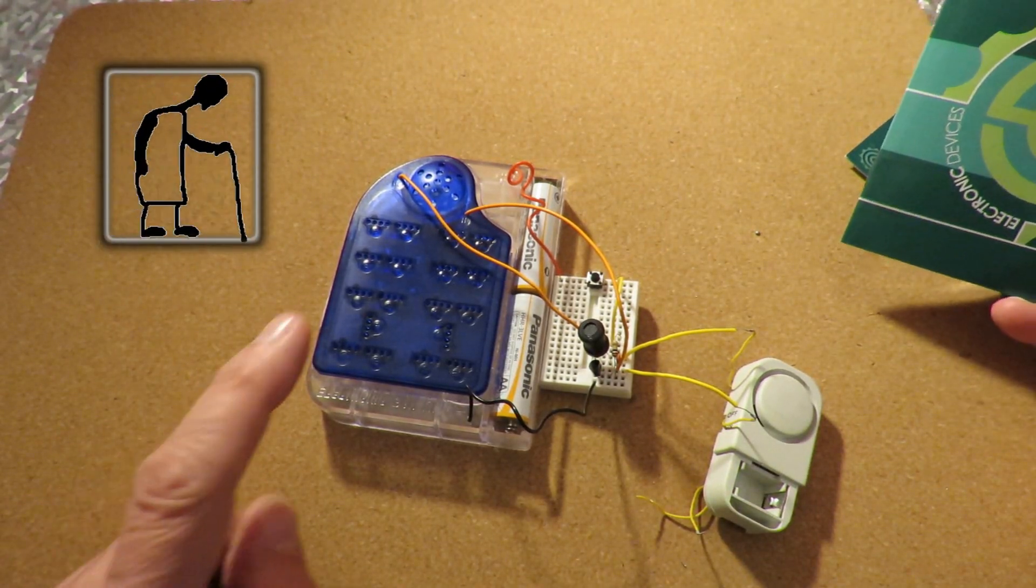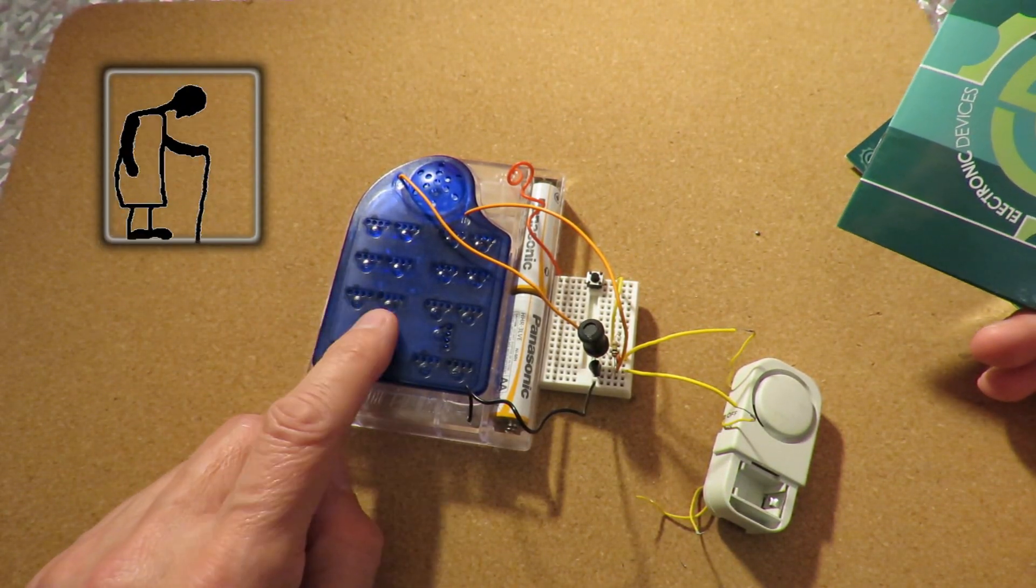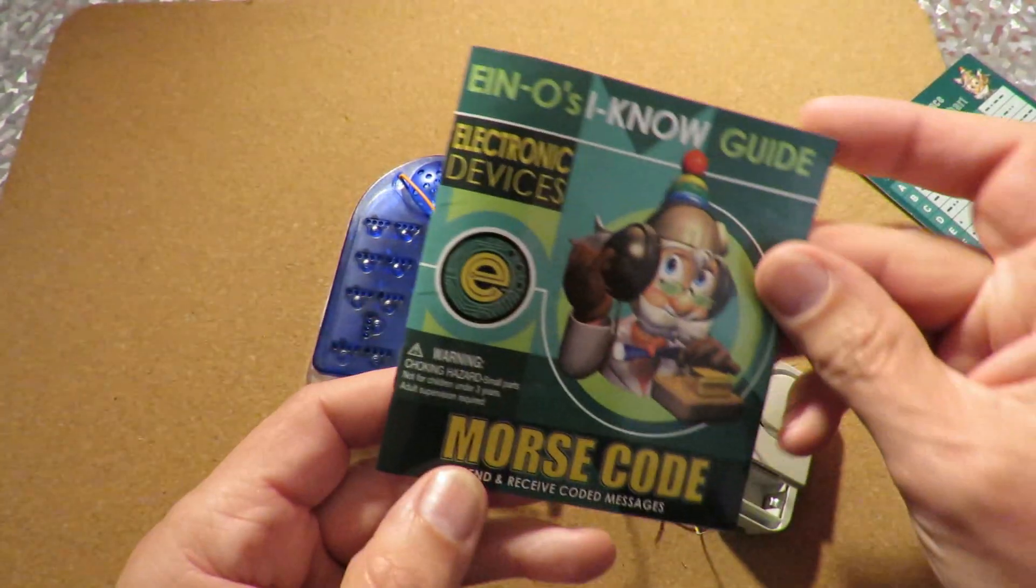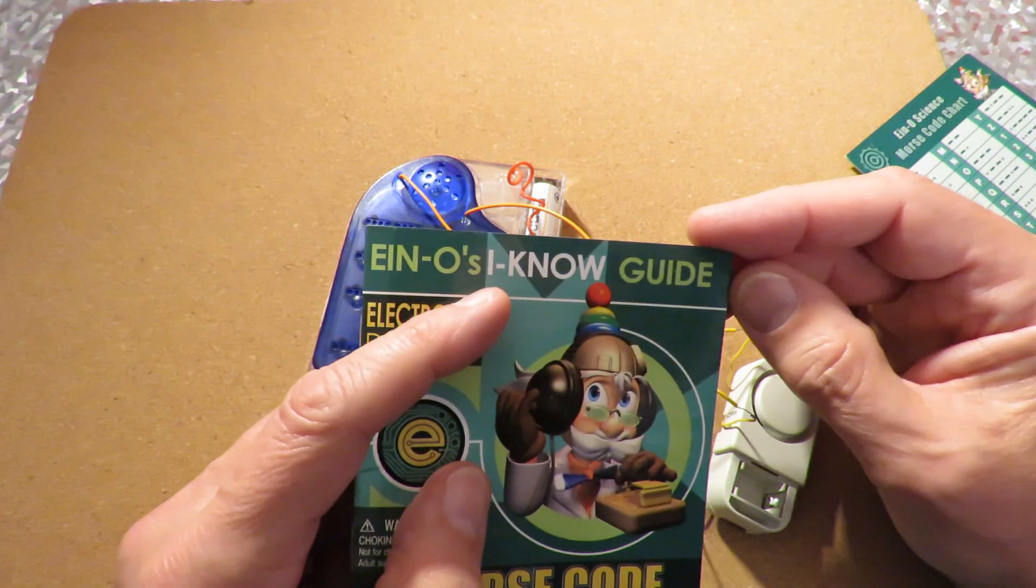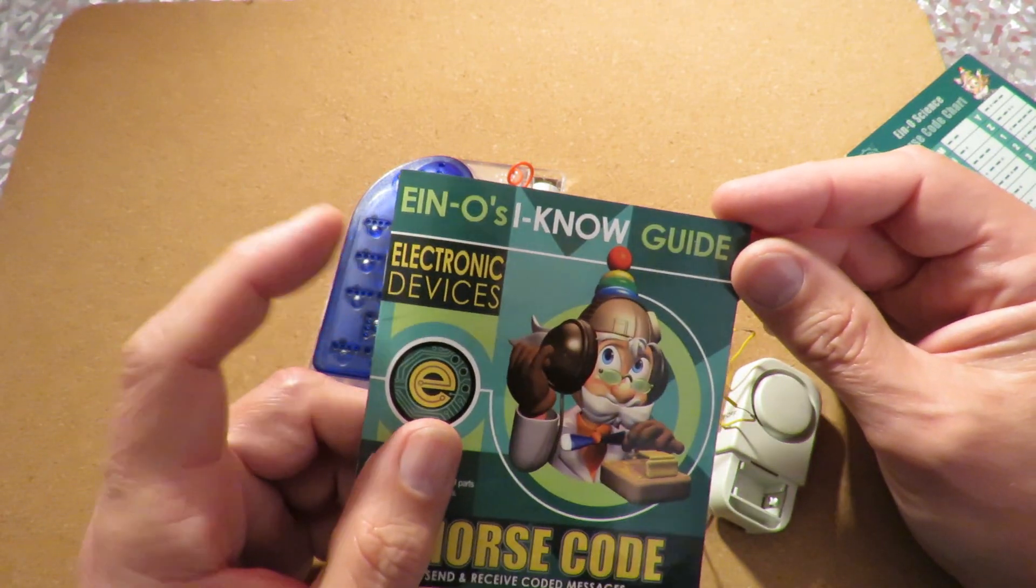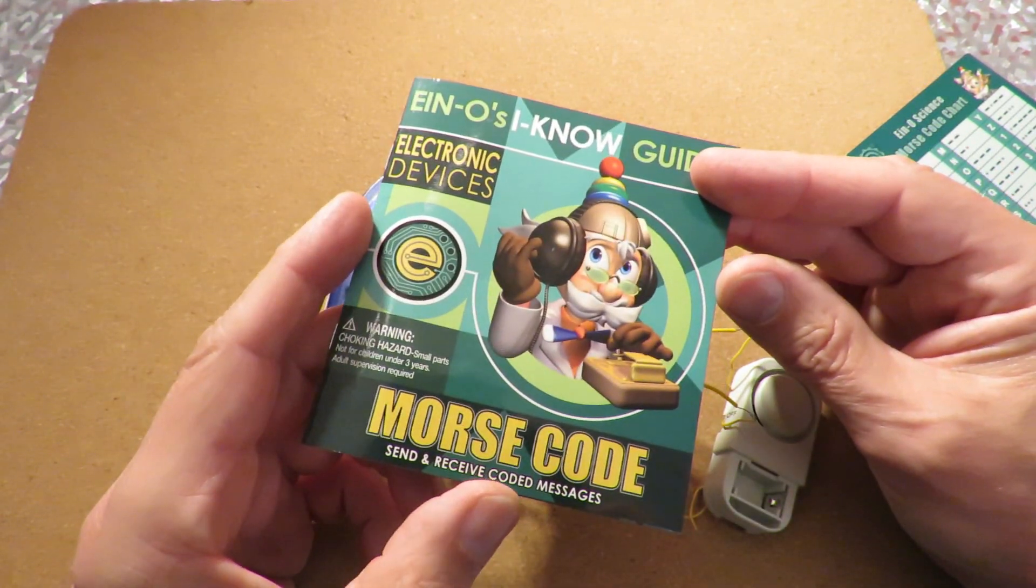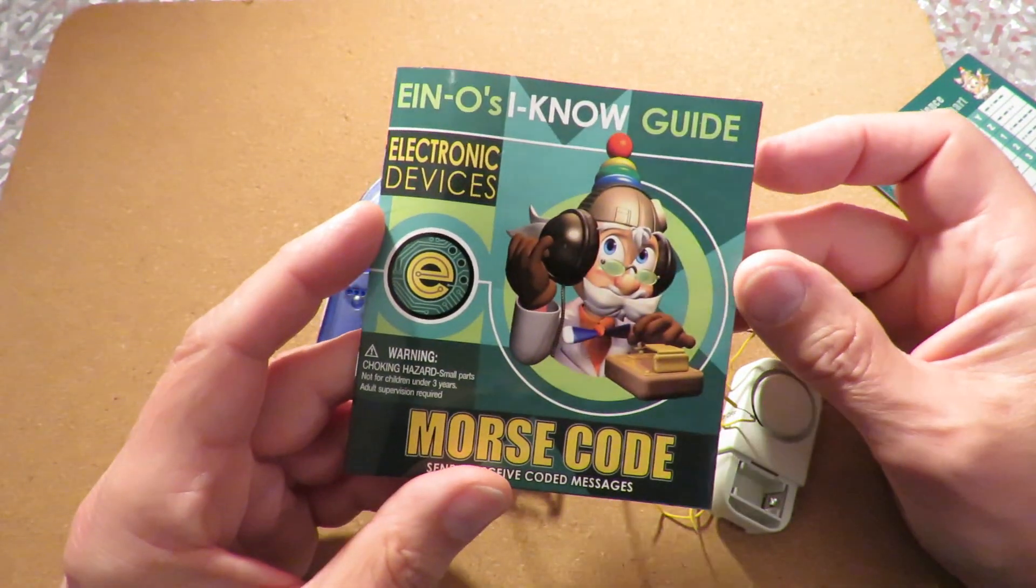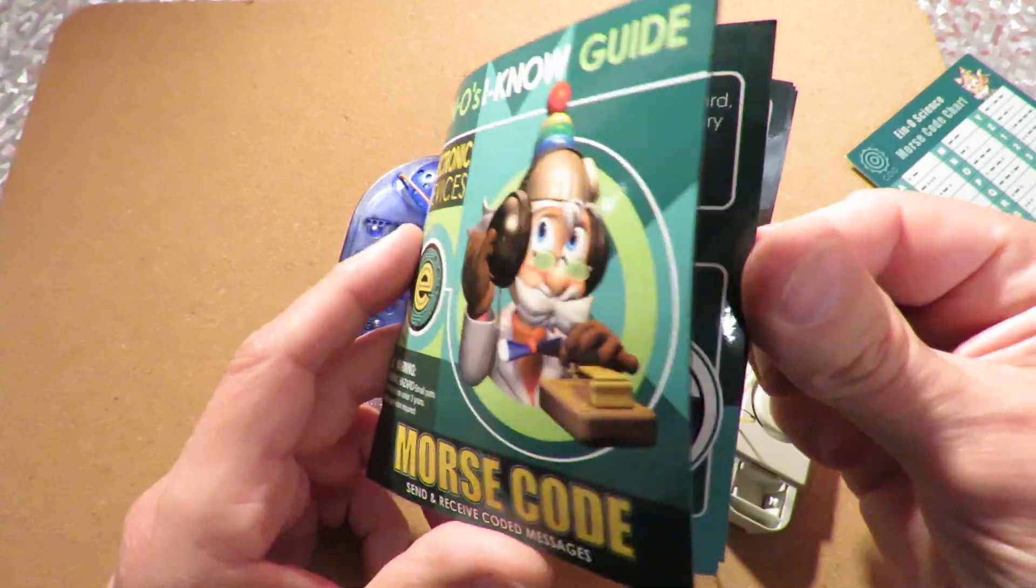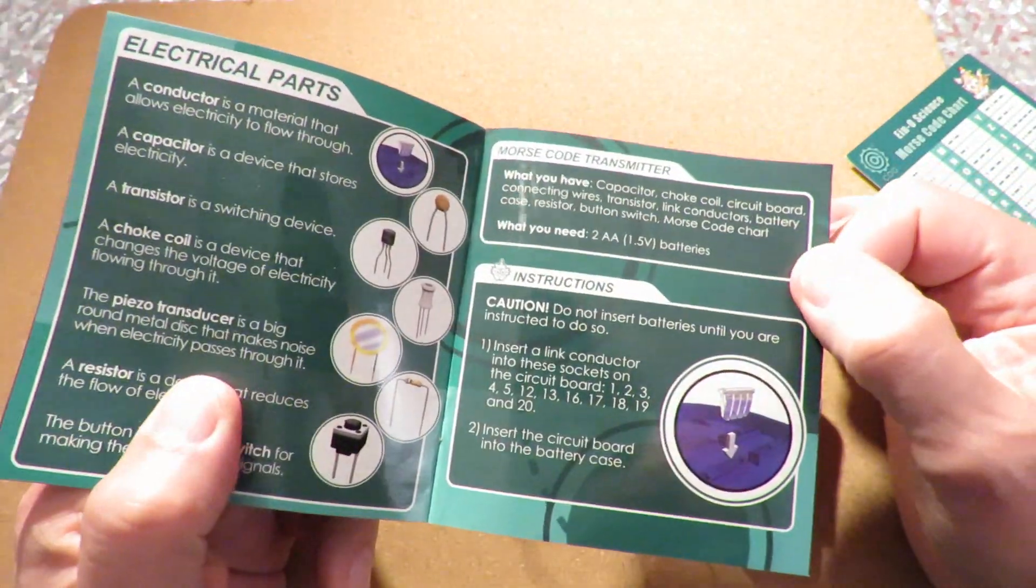Hi guys, you might have seen the video where I assembled this INO's INO Guide Electric Devices Morse Code kit for sending and receiving coded messages. It was a rather nice little kit with some basic problems.